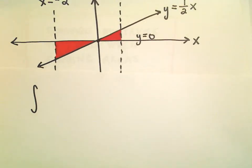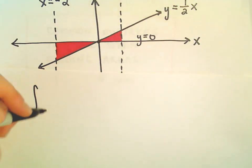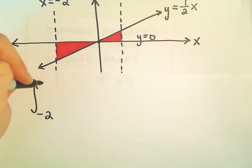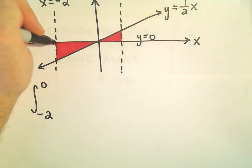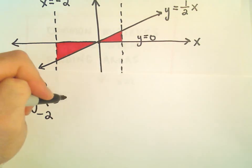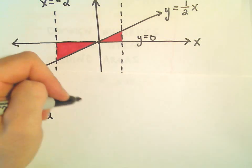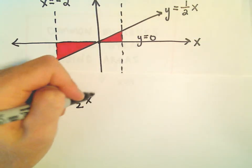So over this first part, this region to the left of the y-axis, we're going from x equals negative 2 up to 0. If you think about this one, the top curve is really the line y equals 0. That's the top curve, and then we're subtracting away the bottom curve, which again would be our 1 half x.